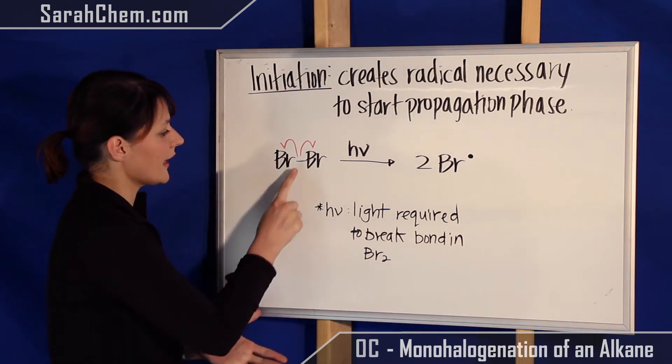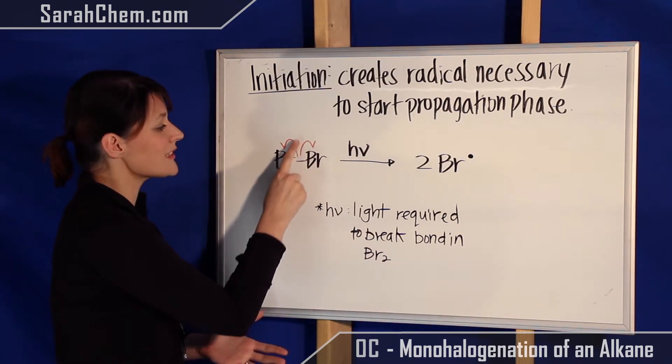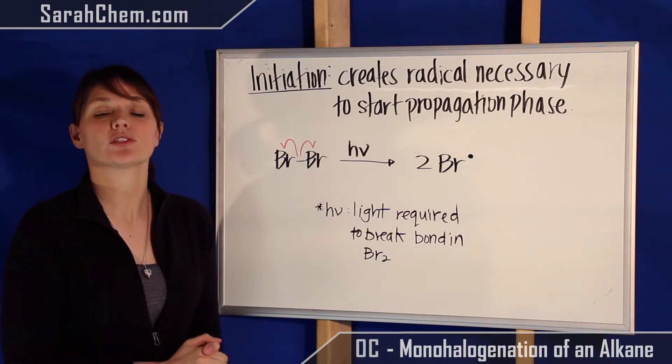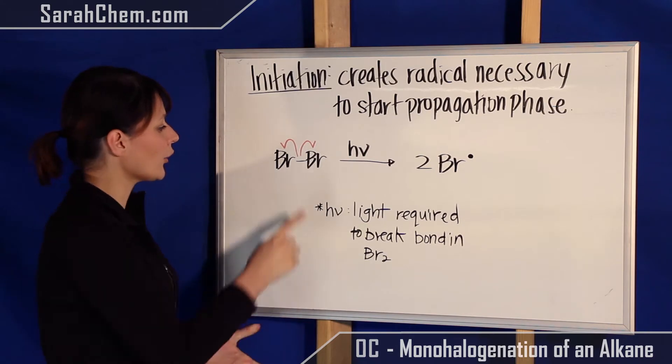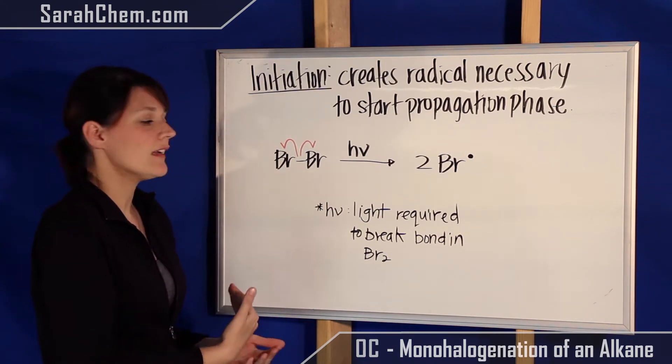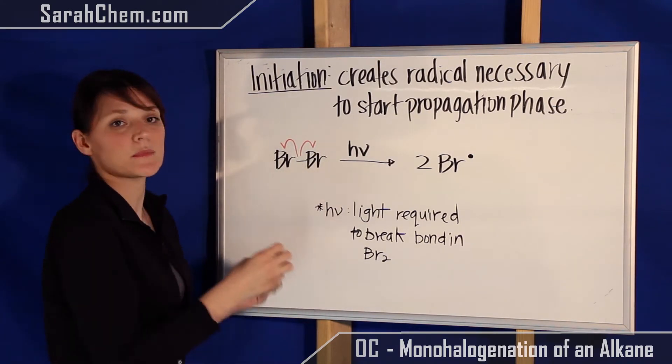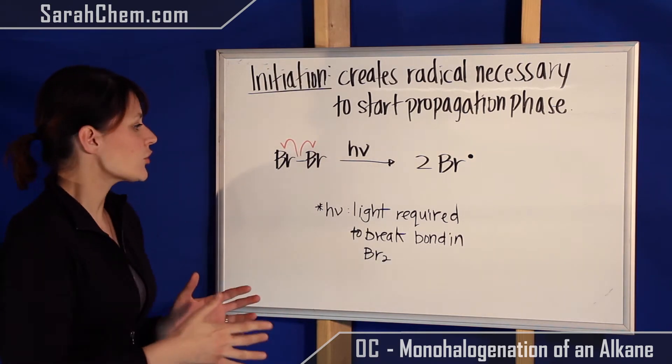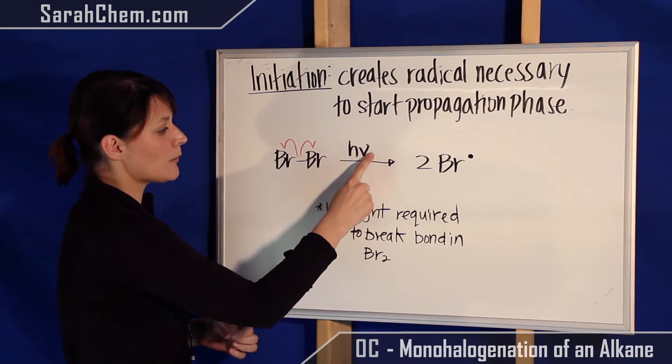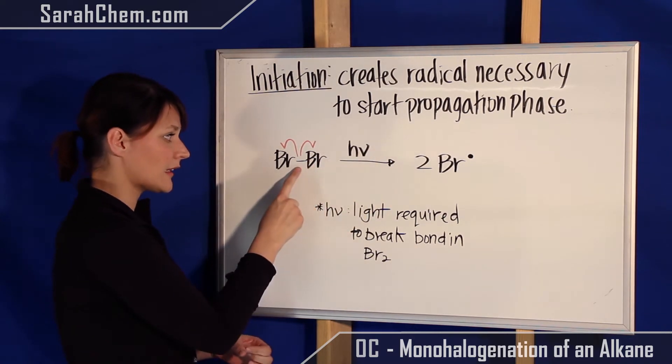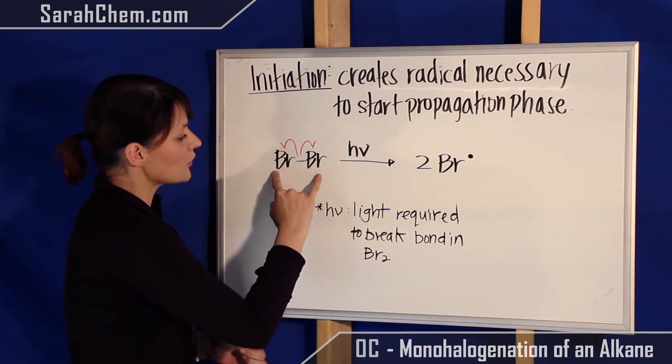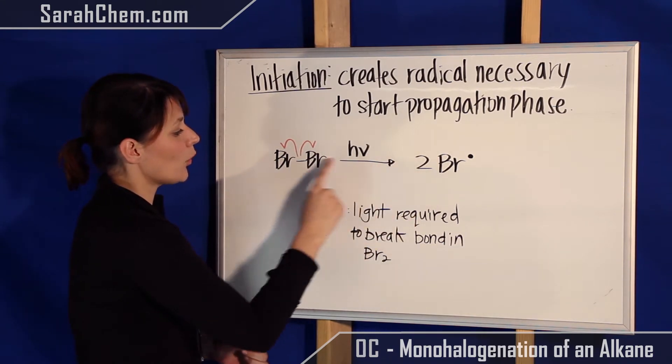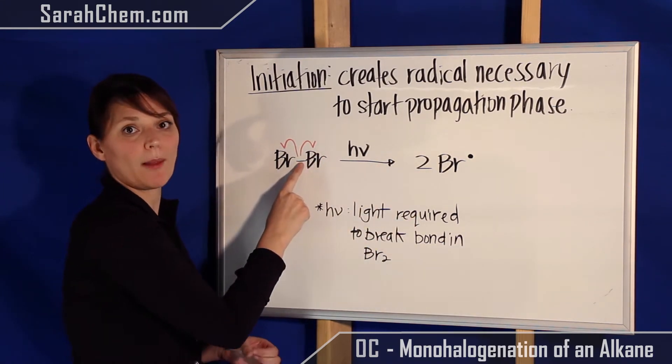So over here, what we see is an arrow where you have two single-headed arrows going in either direction. This kind of breaking is called a homolytic cleavage, where you're going to break that bond evenly, such that each one of the atoms that is in that bond will get one of the electrons from that bond that you're breaking. So over here in the presence of light, we're able to initiate the homolytic cleavage, where bromines are going to separate from one another. So we're going to have two of them, and each one will get one of the electrons from that bond.